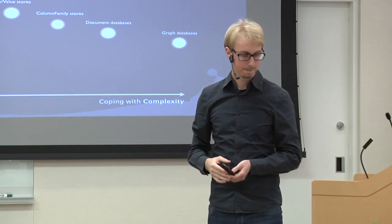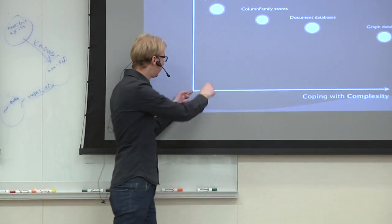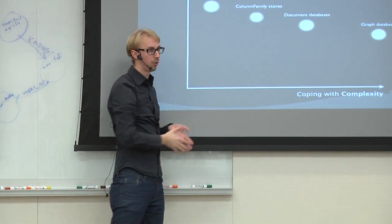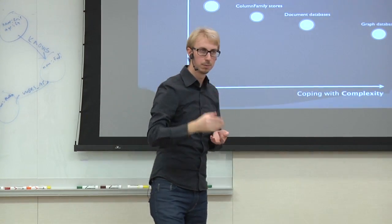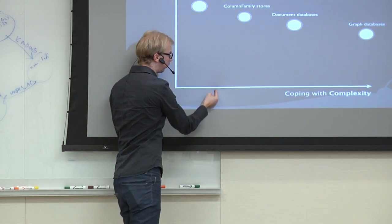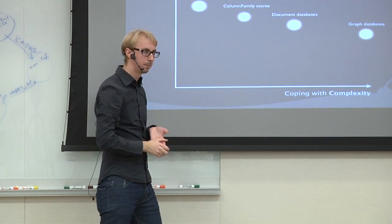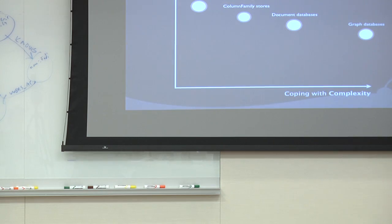Where would MySQL sit on this chart? MySQL would be here — if you have very complex data, the joins would kill you, and if you have very big data, the lack of horizontal scalability would kill you. The relational model — Oracle, MySQL, Postgres — all sit in the same area. Should we panic and change our databases? Well, for most founders in here, the biggest problem is probably not the database — it's that you haven't yet validated paying customers.